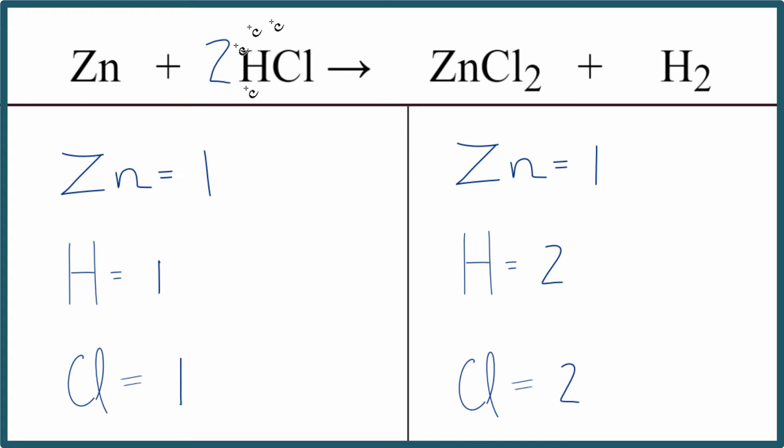So this two, it applies to everything here in the HCl molecule. We have one hydrogen times two. That'll give us two hydrogen atoms. And then the one chlorine times the two, that gives us two chlorine atoms.